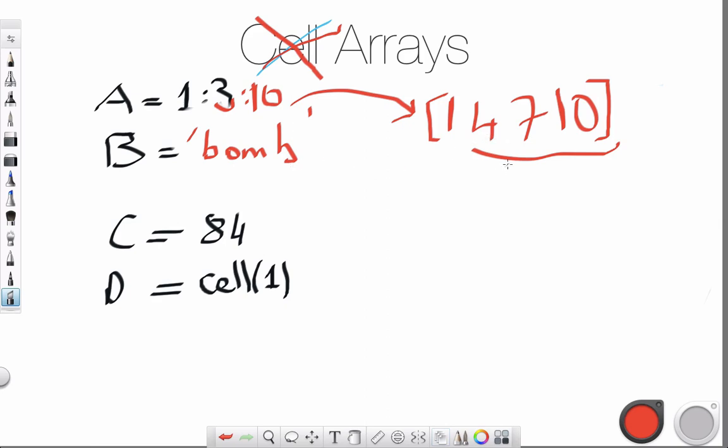So you could even do this: 1, 4, 7, 10 - it would be a column vector.